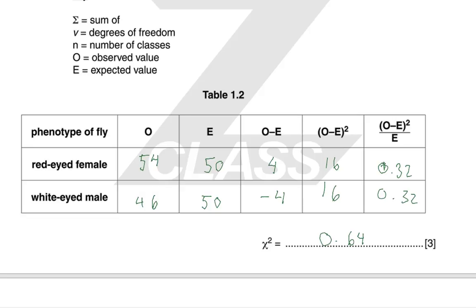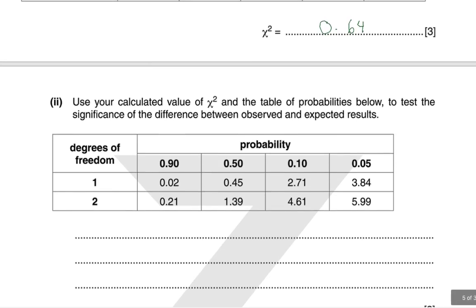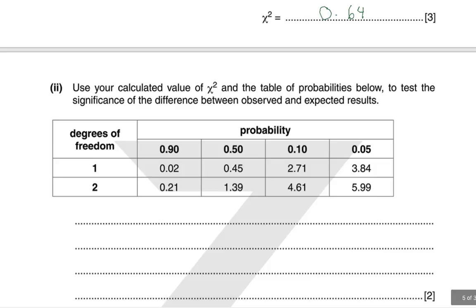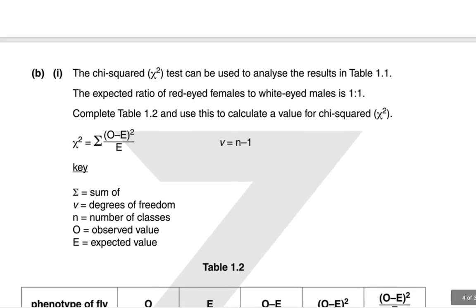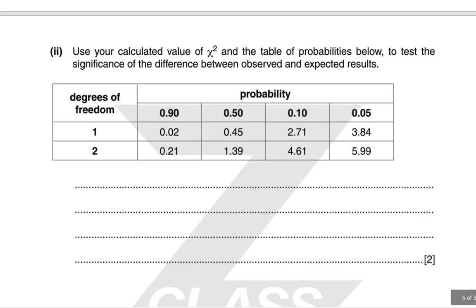To test significance: degrees of freedom is n−1, and since n equals 2, degrees of freedom is 1, so we look at the first row. At the 5% significance level, our chi-squared value of 0.64 is smaller than the critical value. We can therefore conclude there is no significant difference, and this variation occurs due to chance.